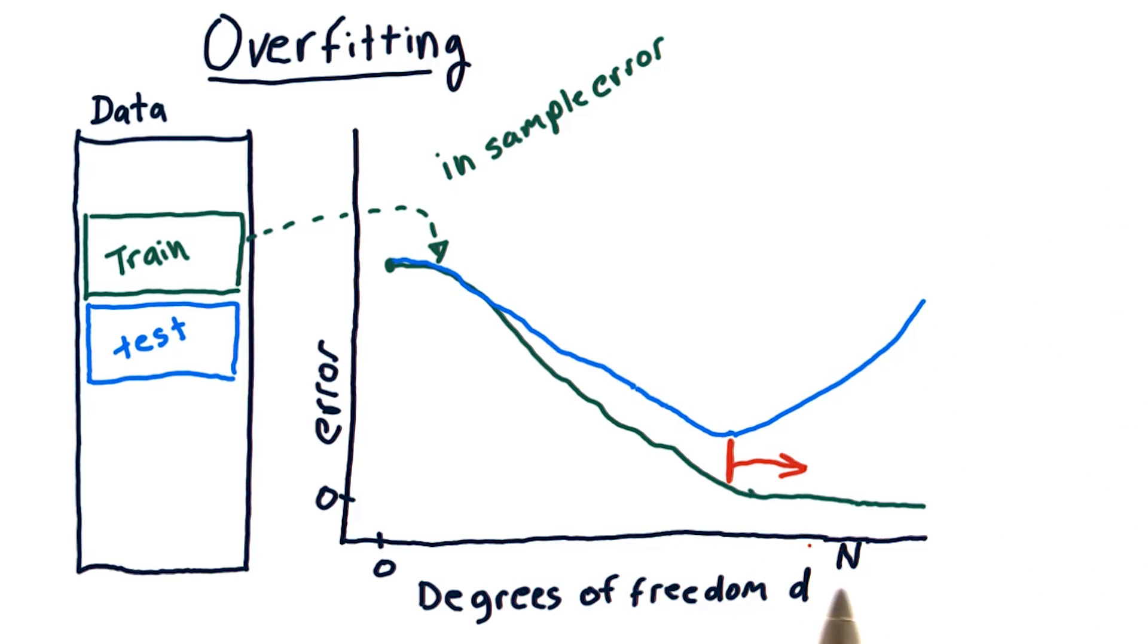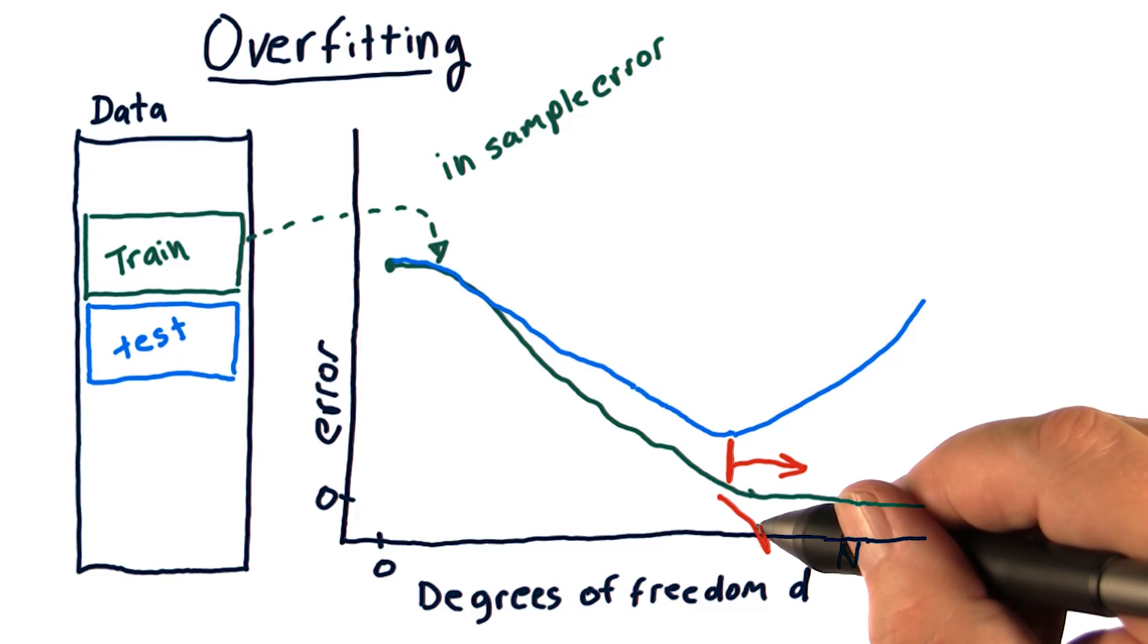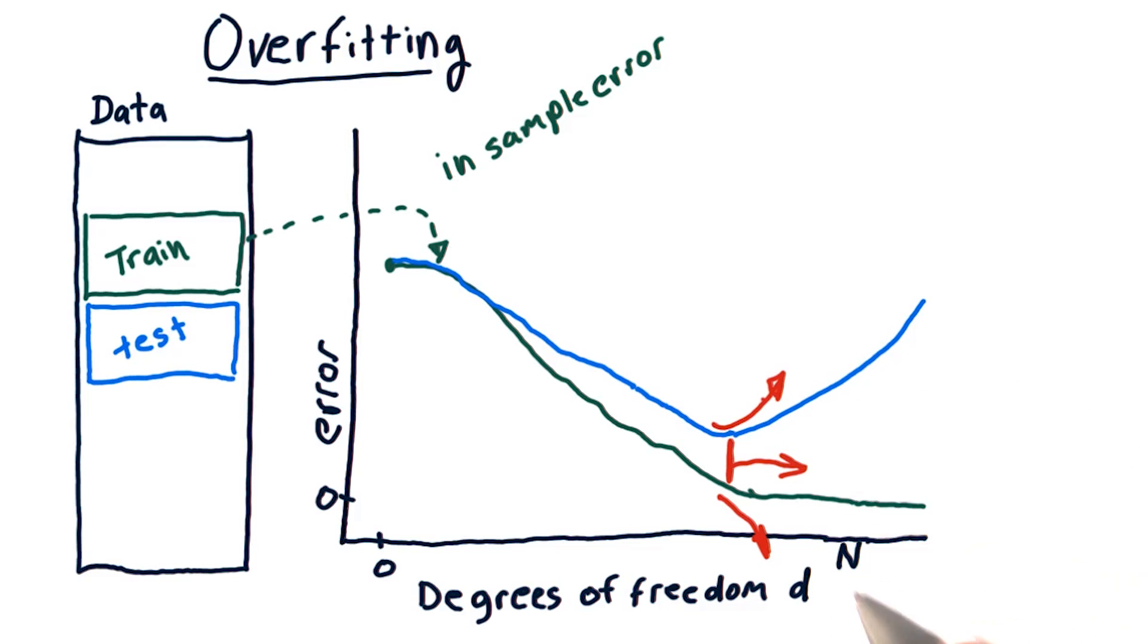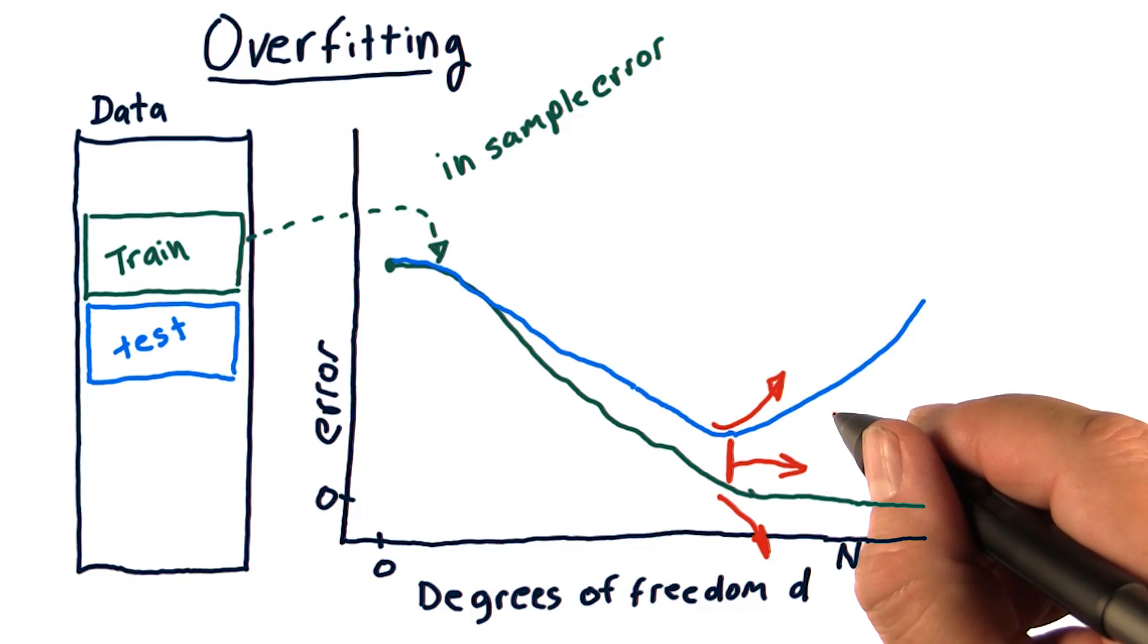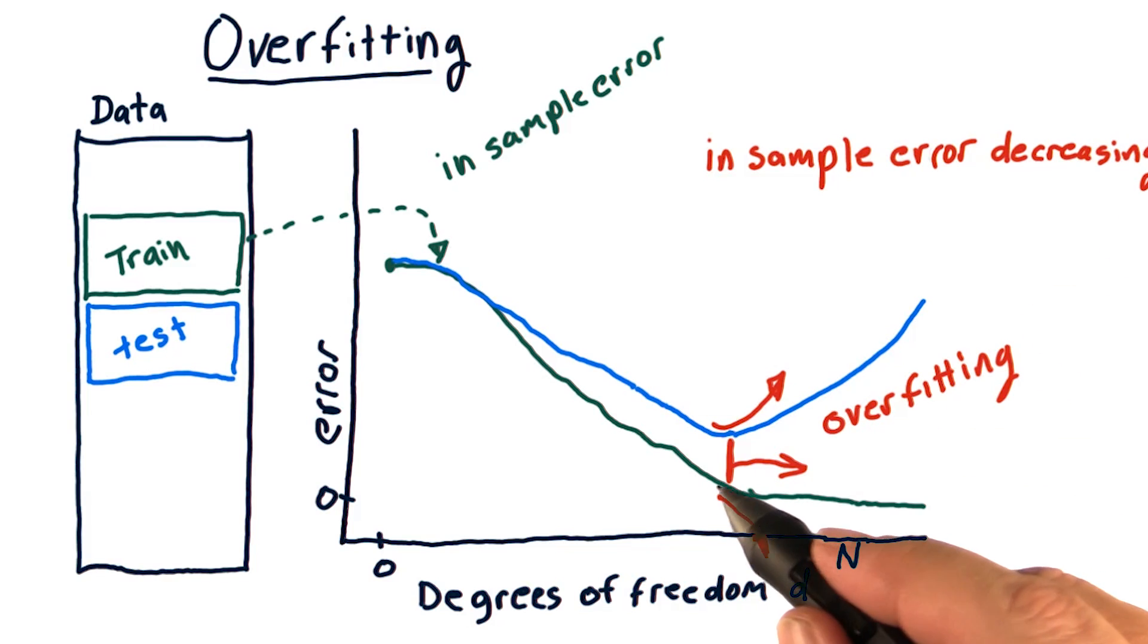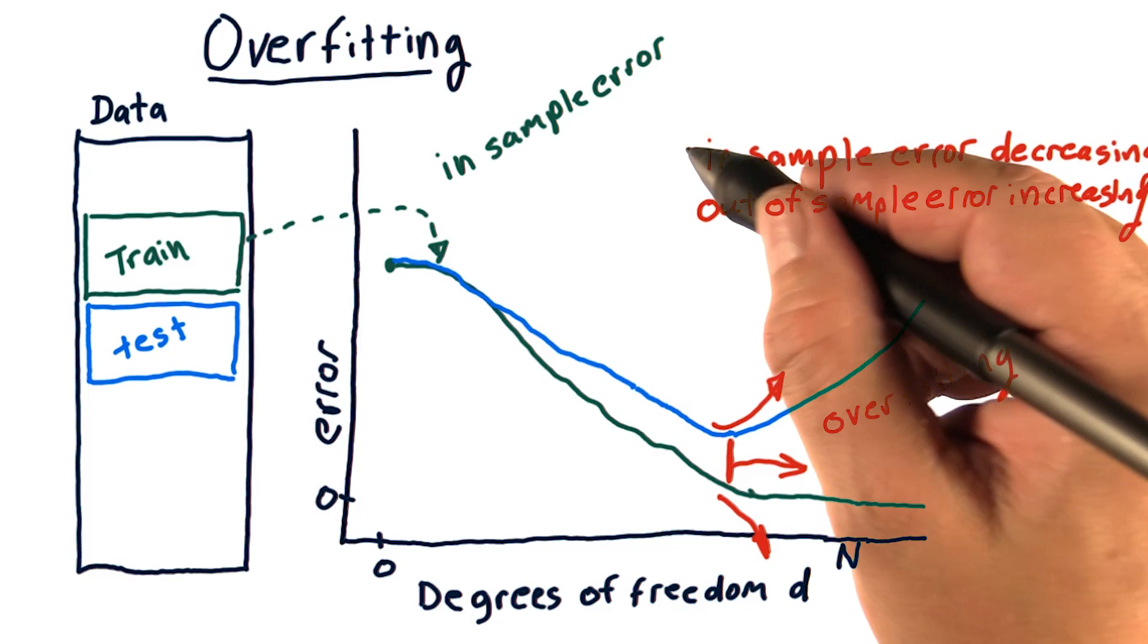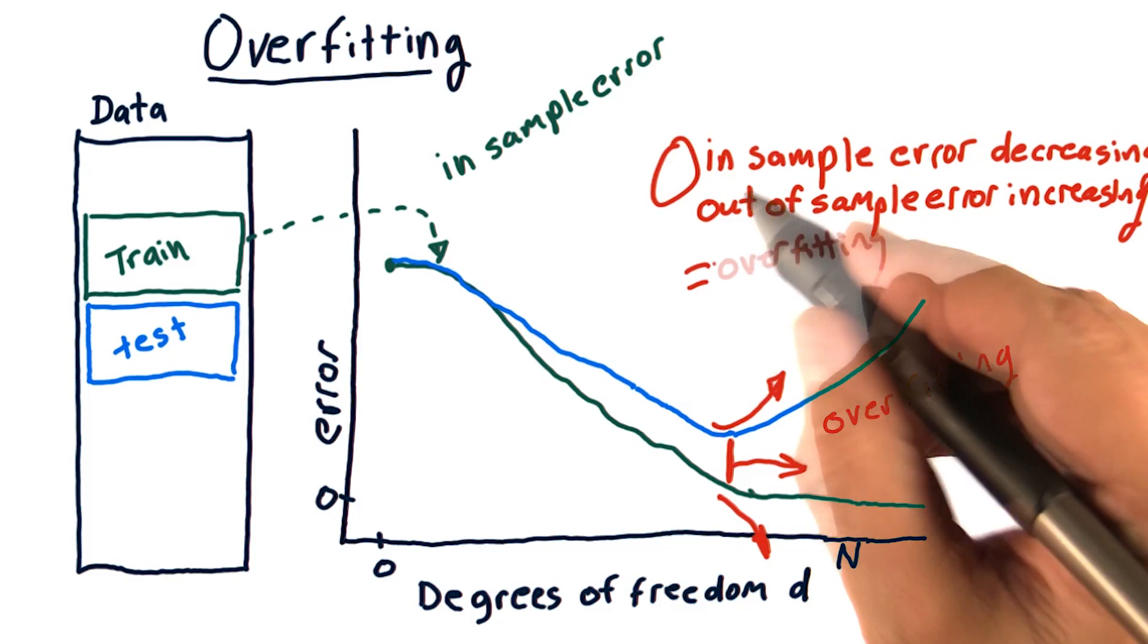In this area, as we increase degrees of freedom, our in sample error is decreasing. But our out of sample error is increasing. And that's how we define overfitting. This is the region where overfitting is occurring. So let me state that again. In sample error is decreasing. Out of sample error is increasing. When we have those two together, it's overfitting.